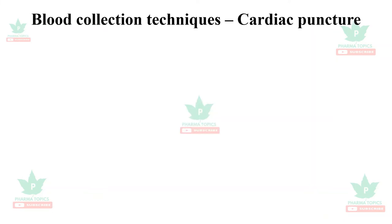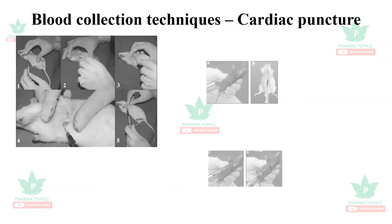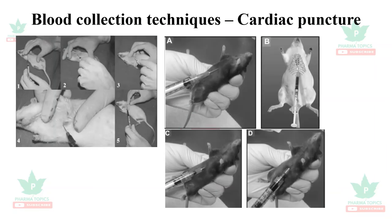Cardiac puncture is usually preferable in terminal dissection of animals. The animal is killed by cardiac puncture, and after that, the organs can be utilized for histopathological studies.